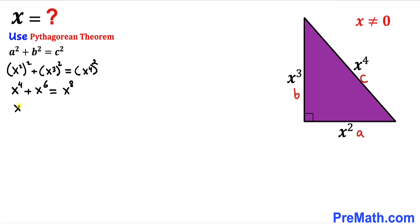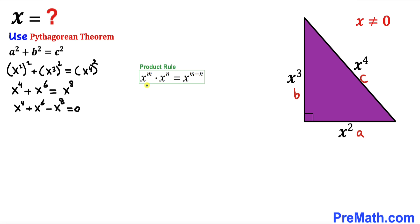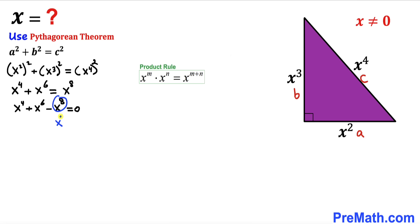So we have x⁴ + x⁶ − x⁸ = 0. Now let's recall the product rule of exponents: multiplication corresponds to the sum of exponents. We can rewrite x⁶ as x⁴ × x² and likewise x⁸ as x⁴ × x⁴.